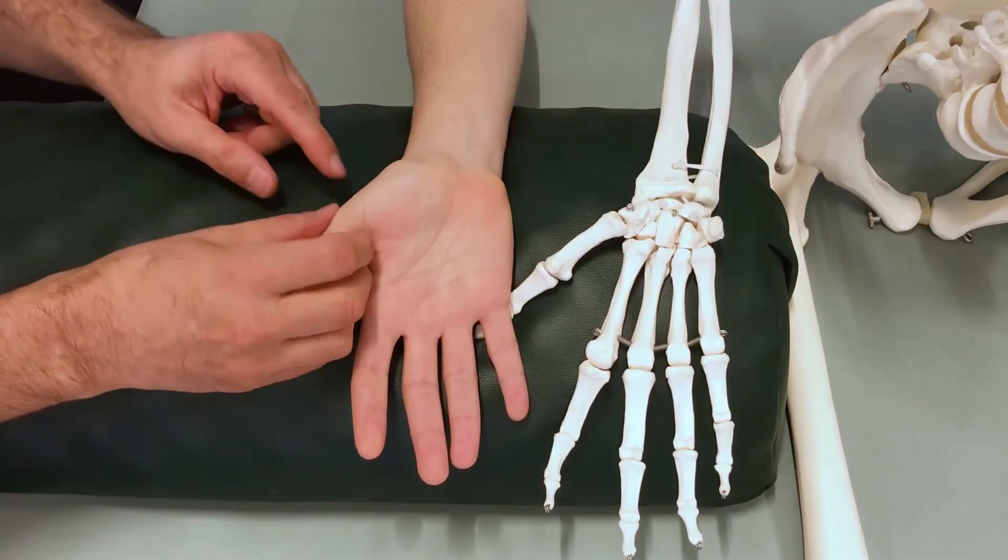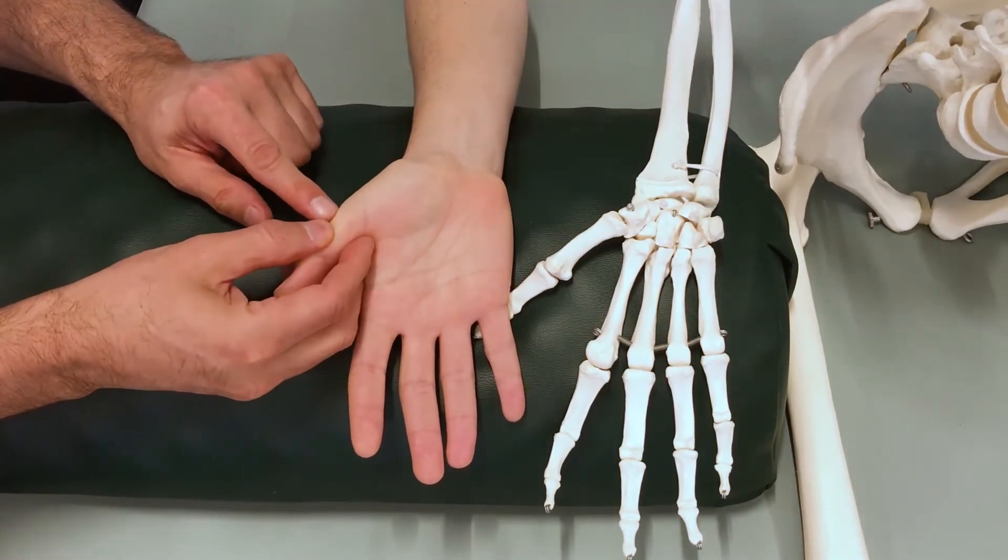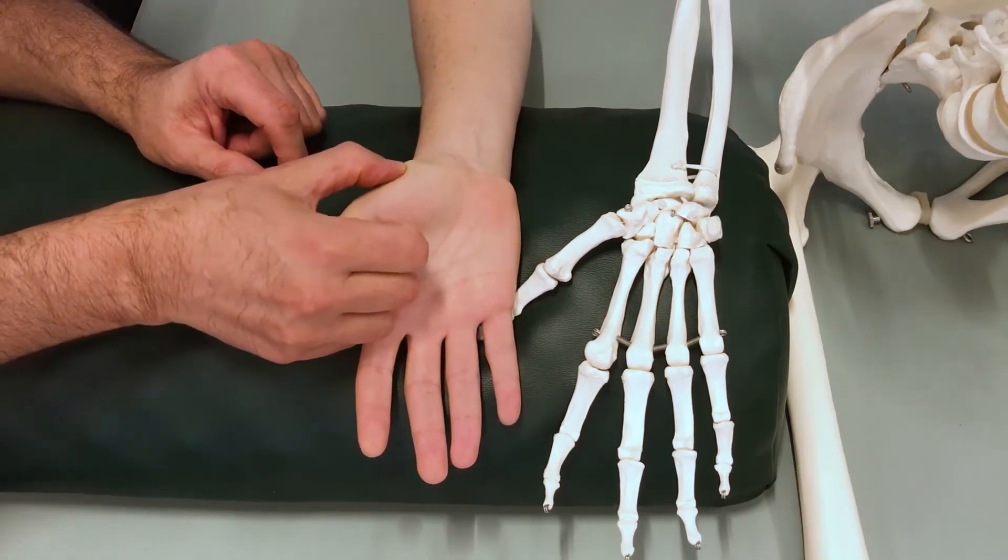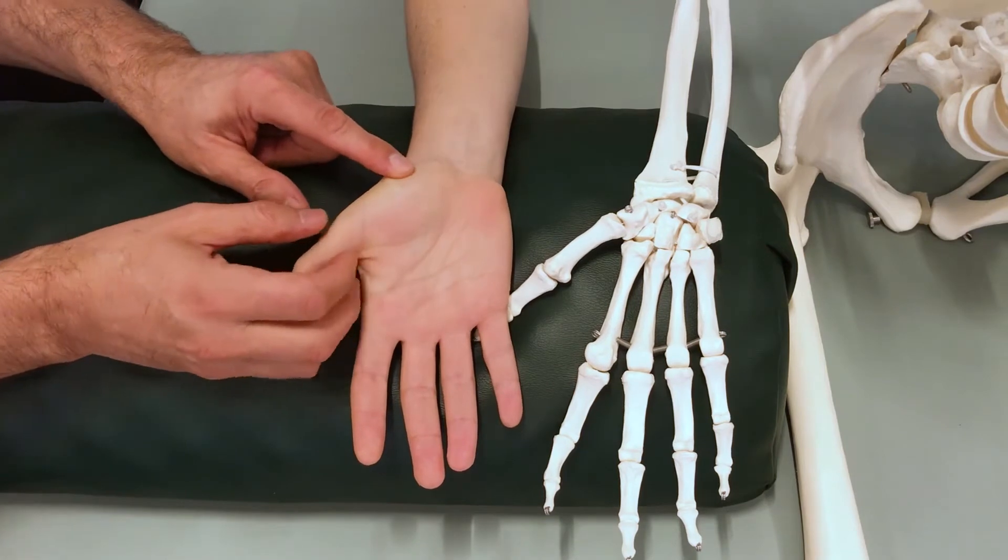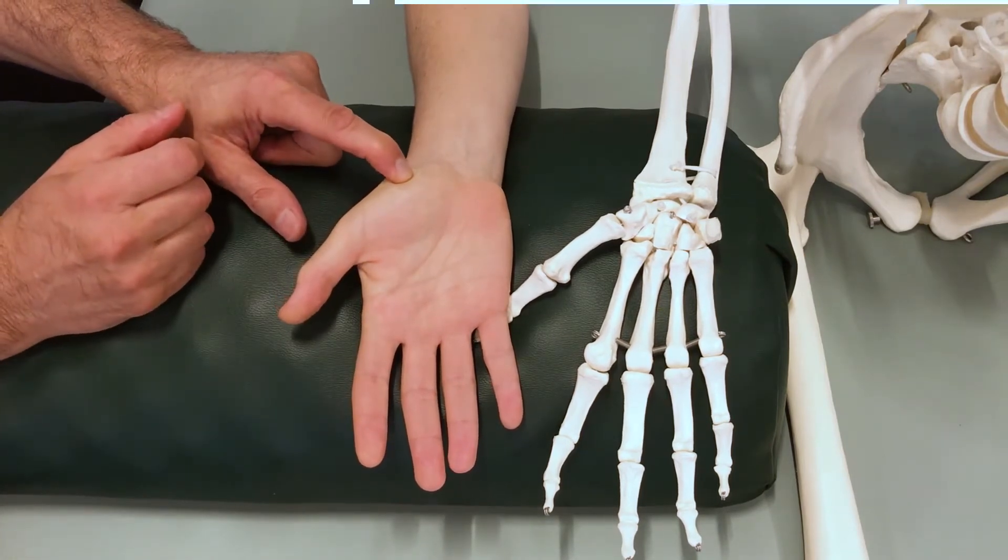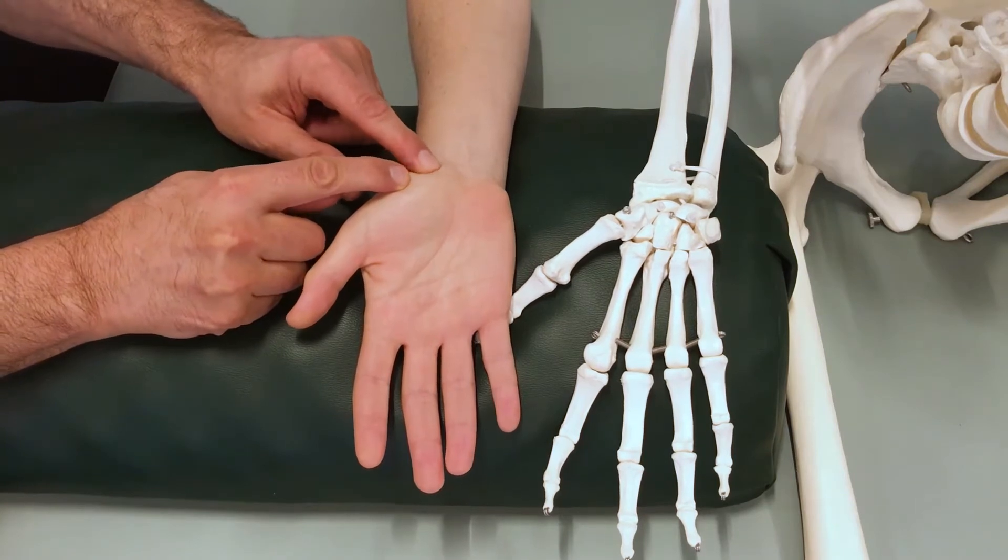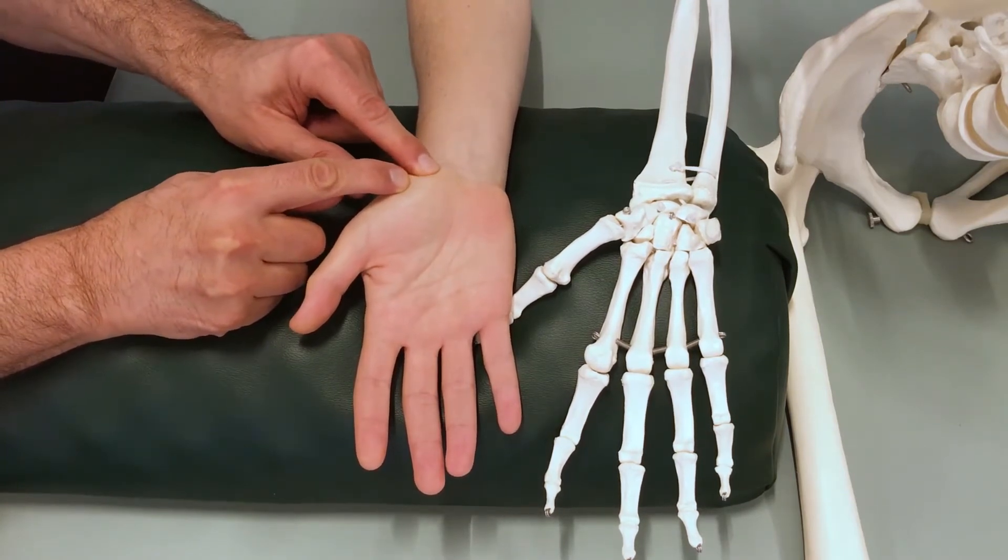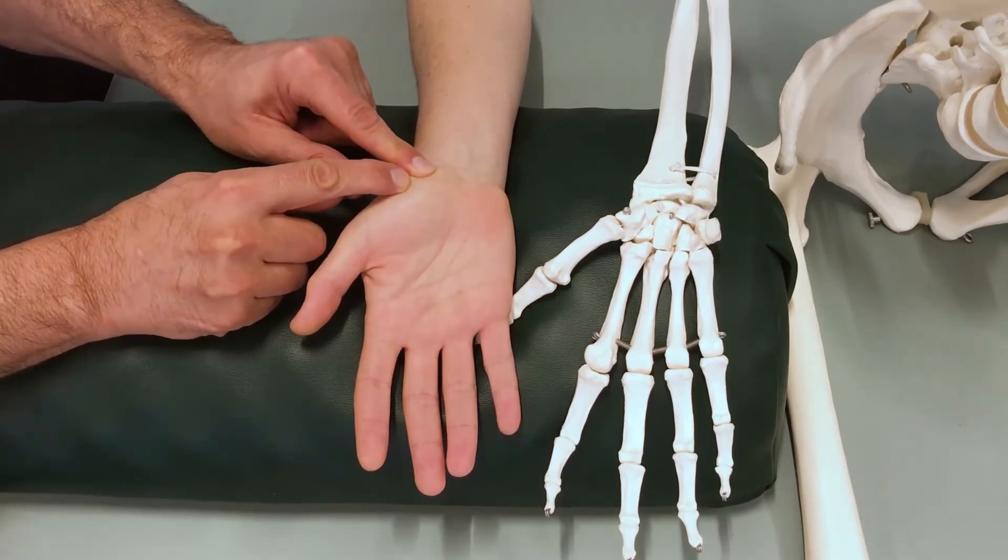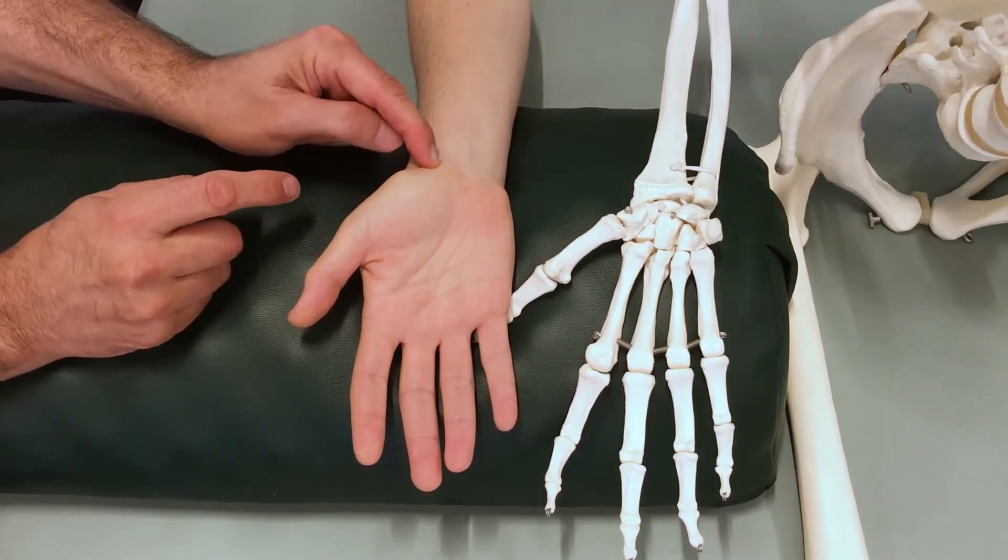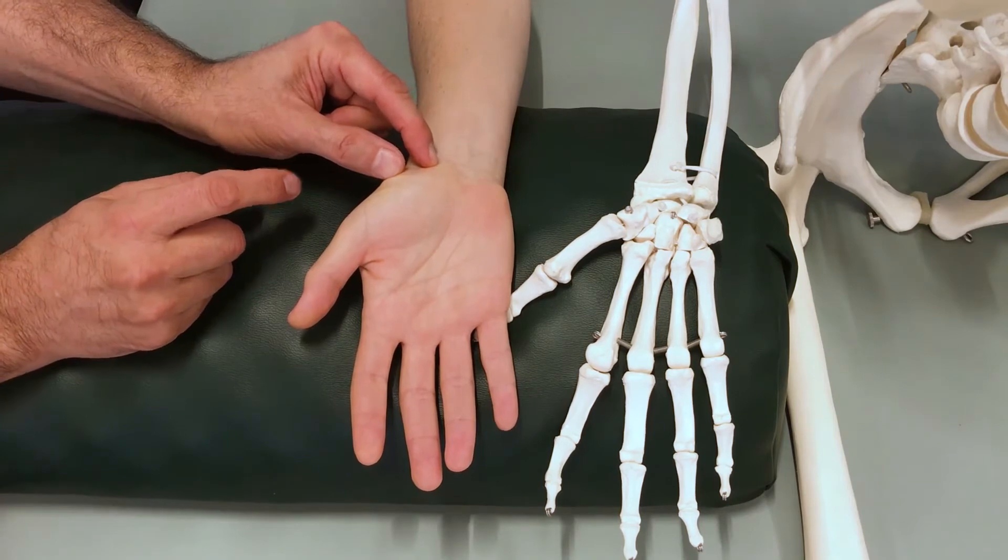Over on the radial side I look for the tubercle of the trapezium. I find the metacarpal of the thumb. I drop back until I feel the joint line. There is the trapezium. There is the tubercle of the trapezium. I drop back approximately a bit and I feel for a prominent protuberance of bone. And there is right here, yes, is the tubercle of the scaphoid.